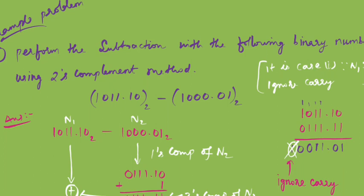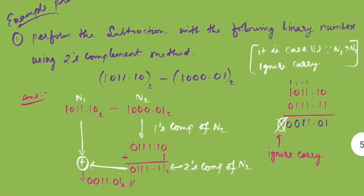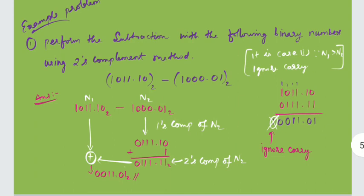The problem given has binary numbers directly. We have to perform binary subtraction using the two's complement method. n1 is 1011.10 and n2 is 10000.01. First we have to calculate the one's complement of n2, then add one to get the two's complement value of n2. One's complement is calculated by replacing all zeros with ones and all ones with zeros, giving 0111.10. Then adding one gives the two's complement value of n2: 0111.111. This value is then added with n1.